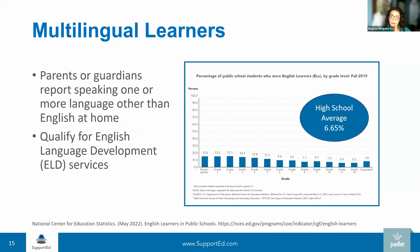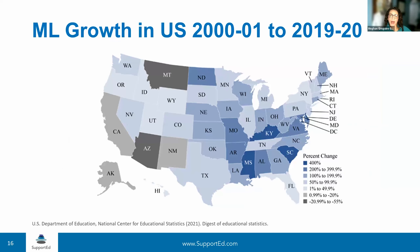It's important that we define who we're talking about. Multilingual learners are students whose parents or guardians report speaking one or more language other than English at home. MLs may or may not qualify for English language development services based on their most current English language proficiency scores, but for the purposes of this webinar, we're looking specifically at those MLs that do qualify for services. As of the 2019-20 school year, MLs that qualify for ELD services made up 10.4% of the public school K-12 population and 6.65% of the high school population.